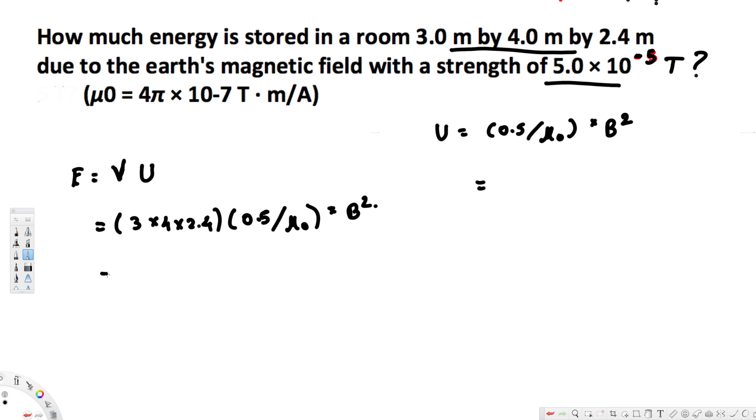Now, let's plug the values. 3 times 4 times 2.4 and here we are going to have 0.5 mu naught is 4 pi times 10 to the power of minus 7.